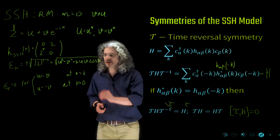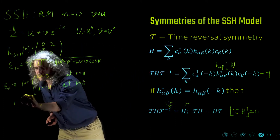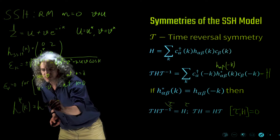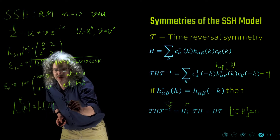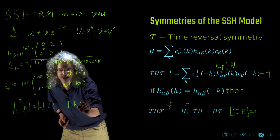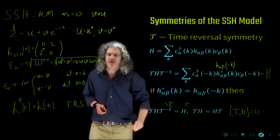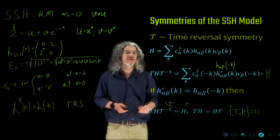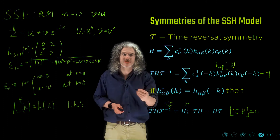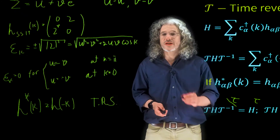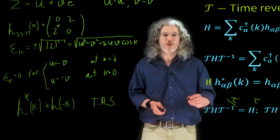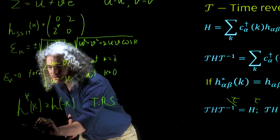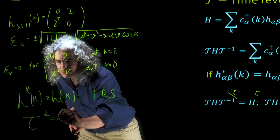To summarize: if H-star of k is equal to H of minus k, that means we have time reversal symmetry. We'll keep that on the blackboard to remember. We have another property of the time reversal operation: if we operate with it twice we come back to the same result, so tau squared is equal to 1.